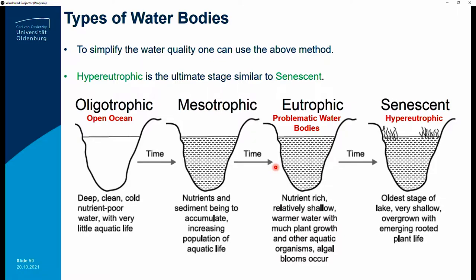You can have oligotrophic waters, mesotrophic waters, eutrophic waters, and senescent waters. Oligotrophic waters are typically found in the open ocean — these are deep, clean, cold, nutrient-poor waters with very little aquatic life. There are very few sources of nutrients compared to near-shore waters or areas with anthropogenic activities.